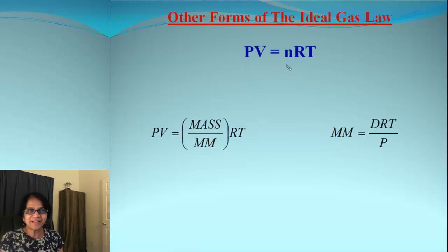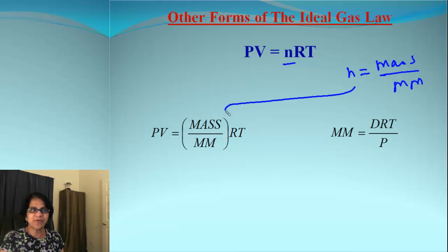So what is N? Number of moles. If you recall, number of moles is always mass divided by molar mass. So if I put that value of N as mass divided by molar mass, what I get is another equation for Ideal Gas Law.